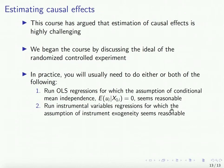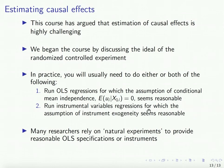Second, you're going to use instrumental variable regressions for which the assumption of instrument exogeneity seems reasonable. Relevance is important — how strongly correlated your instrument is with x — but relevance is not useful if you don't have exogeneity. You can never prove exogeneity or that the exclusion restriction is satisfied, but at least on its face it should look reasonable. More broadly, a lot of researchers are going to rely on natural experiments to provide reasonable OLS specifications or instruments.